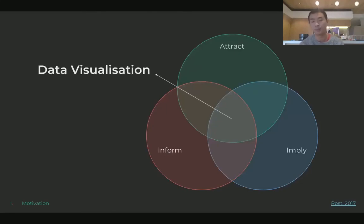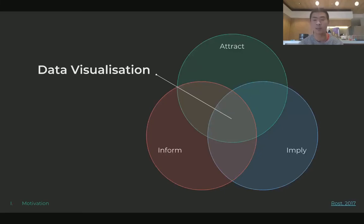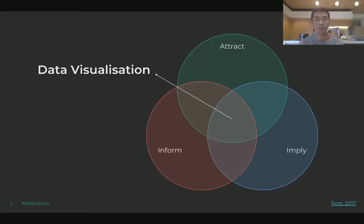Third, there's an emotional level — when you design visuals, everything is by foundation design. The message you're trying to convey and what the visualization implies matters. Ideally, when you do data visualization, you want to be balanced between all three — attracting, informing, and implying. Scientific visualizations tend to fall into 'inform and imply' but don't care about aesthetics, while infographics can be visually extreme but lack correct scales.